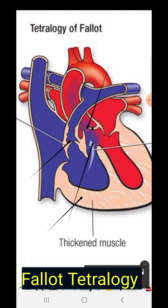We will first discuss pulmonary stenosis. Due to pulmonary stenosis, the right ventricle is strained and there is right ventricular hypertrophy. This pulmonary stenosis will produce an ejection systolic murmur, and the intensity of this murmur is inversely related to the severity of pulmonary stenosis — more stenosis means less intensity.